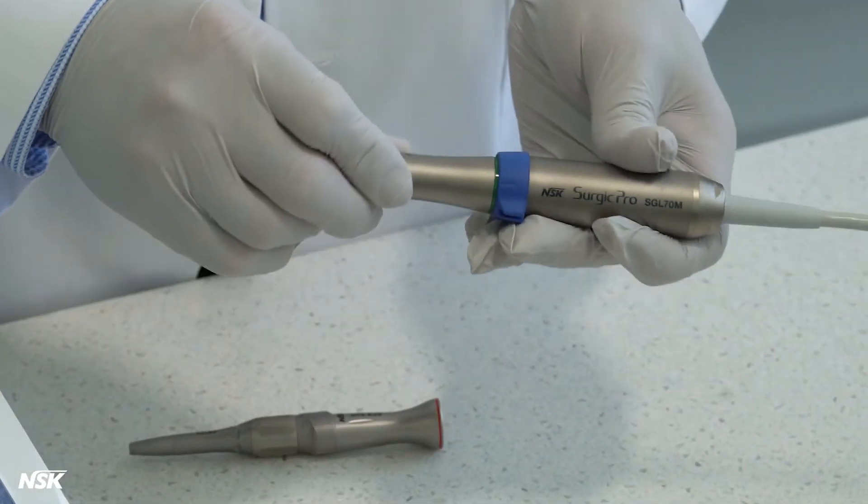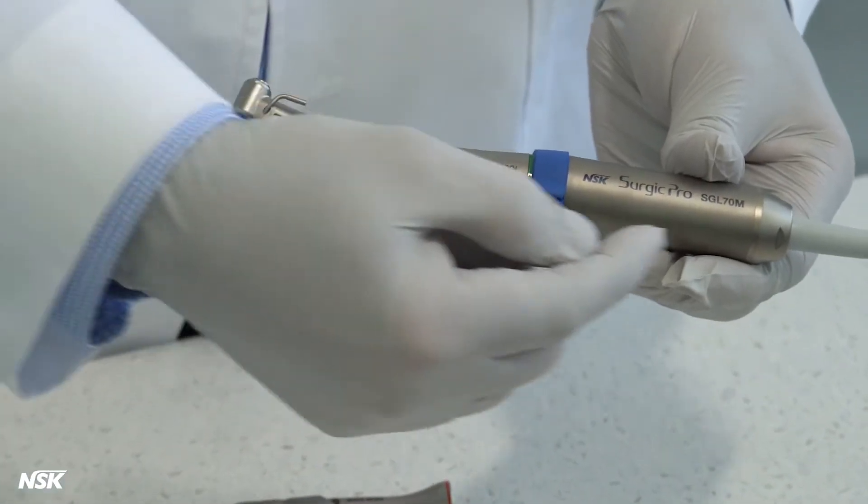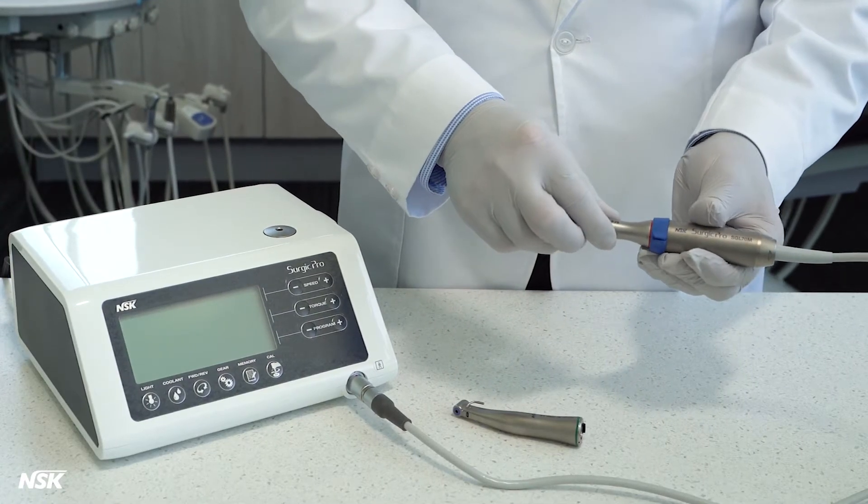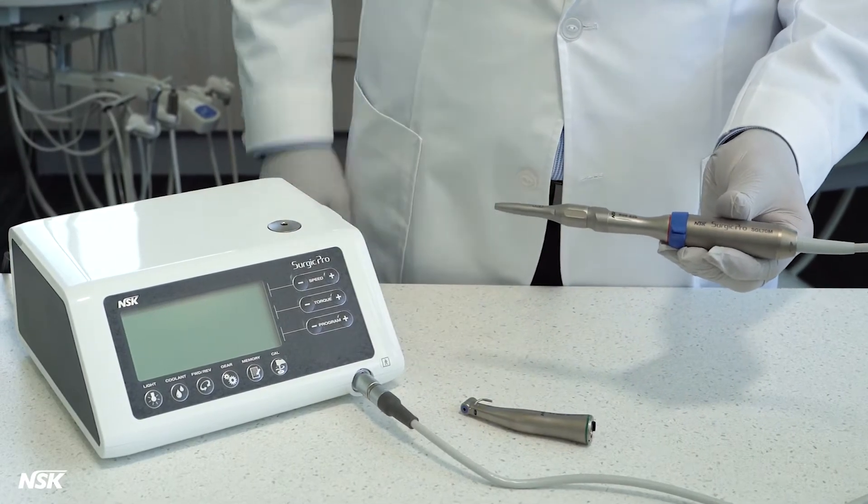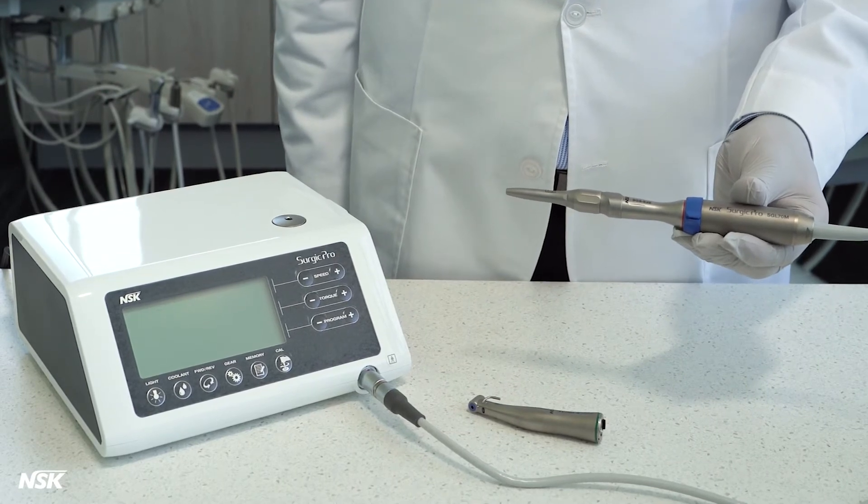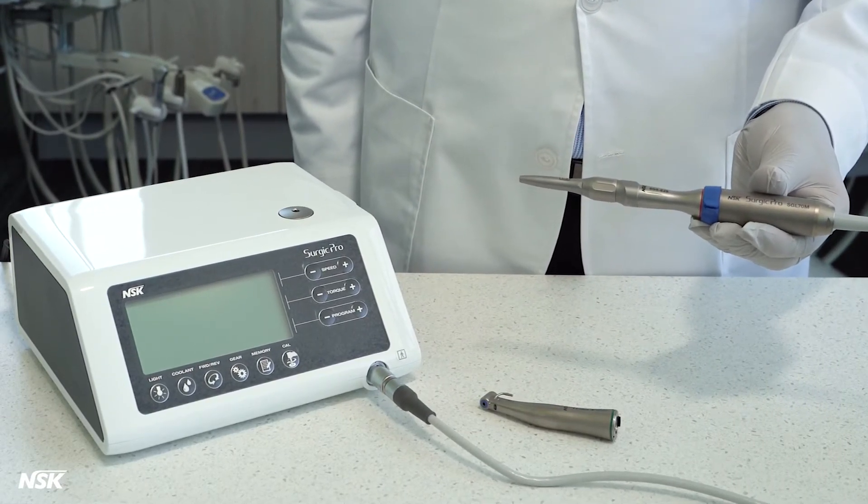Insert the attachment into the motor and twist until it locks in place. Non-optic attachments do not need to be twisted to be locked in. However, microsurgery hand pieces will need to be twisted on non-optic motors to be locked in place.